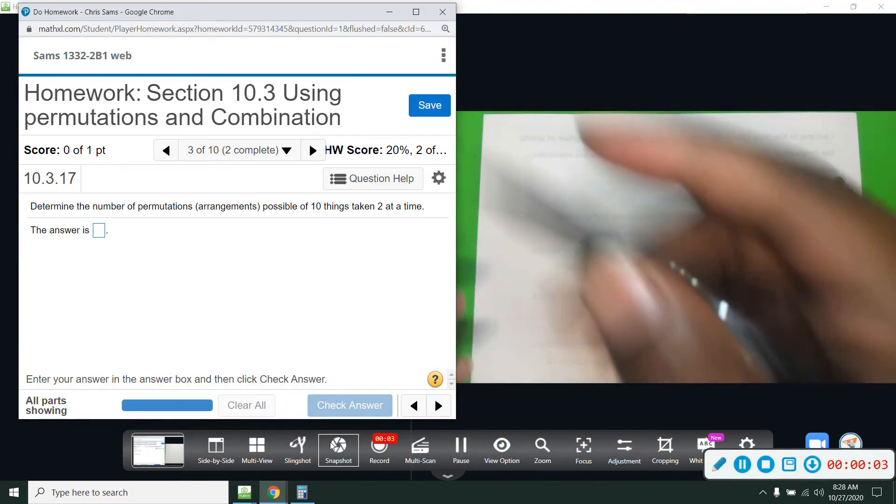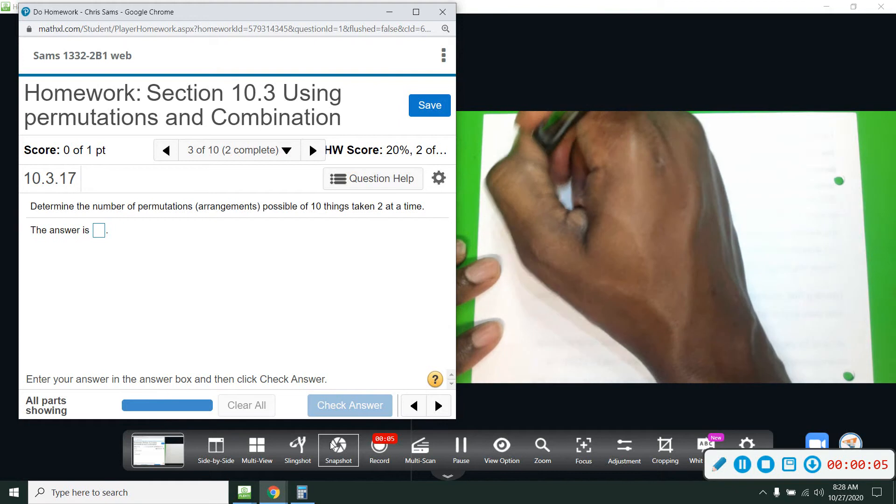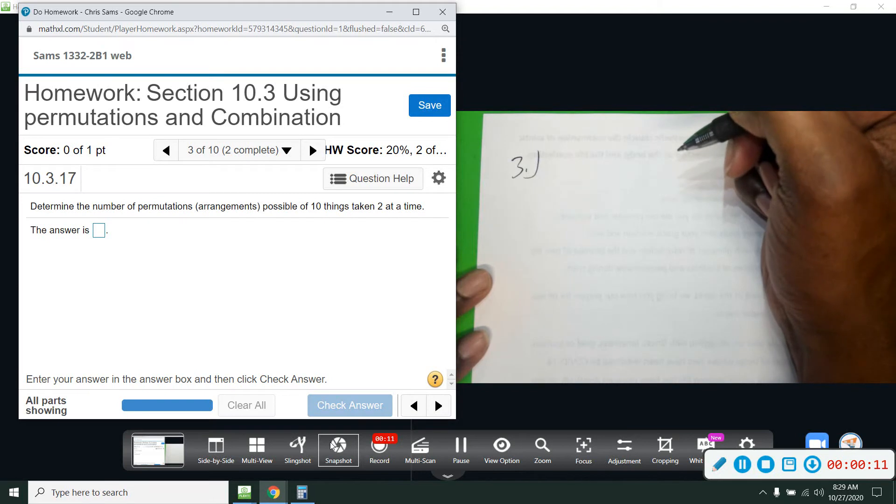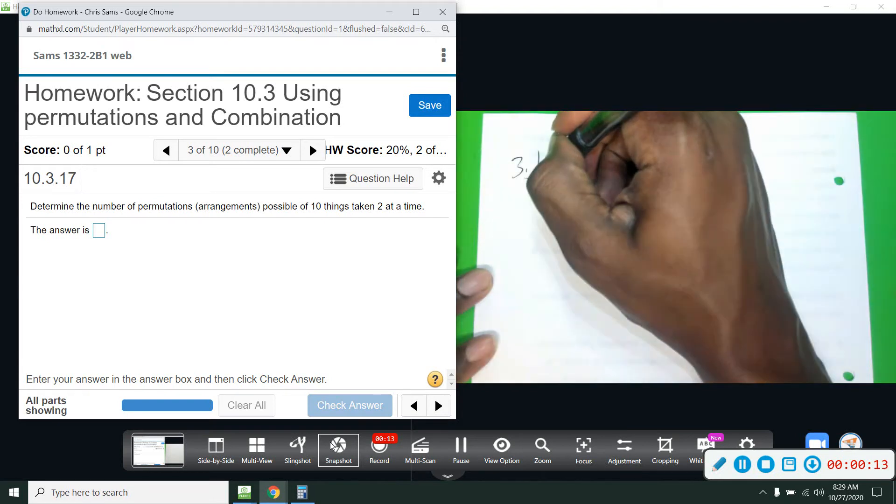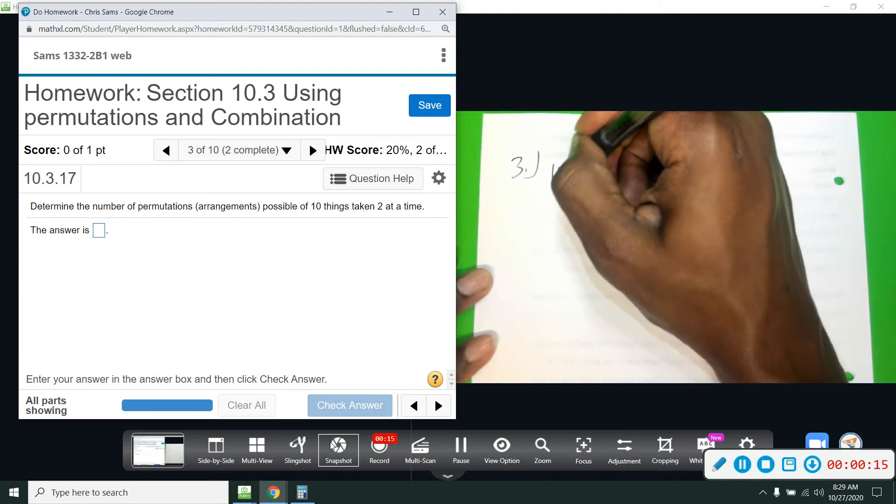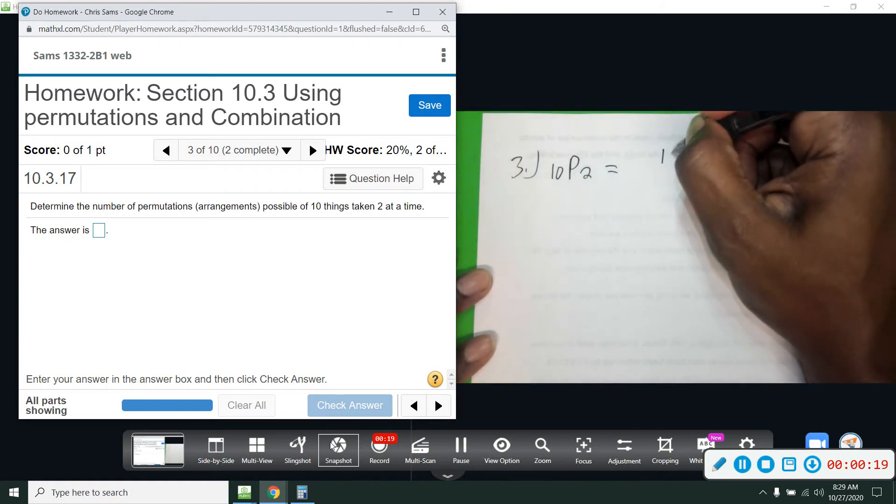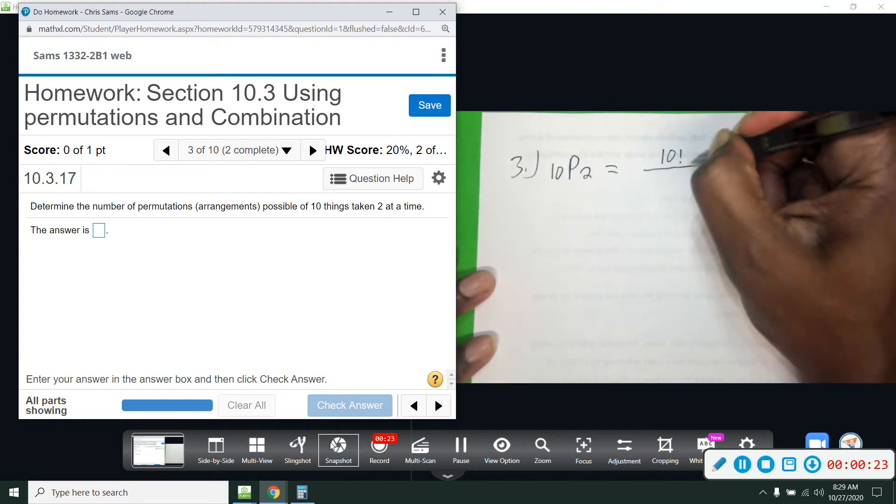Alright, number three. We want to determine the number of permutation arrangements possible of ten things taken two at a time. So that will be 10P2, and then we will do ten factorial divided by ten minus two factorial.